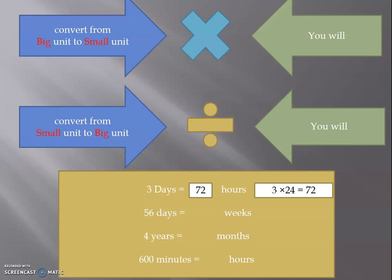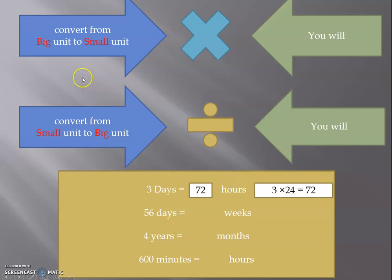In another way: day 1 is 24 hours, day 2 is 24 hours, day 3 is 24 hours. So 24 is repeated 3 times, meaning 24 times 3 equals 72. You can use multiplication or you can count it this way — both give the same answer: 72 hours.